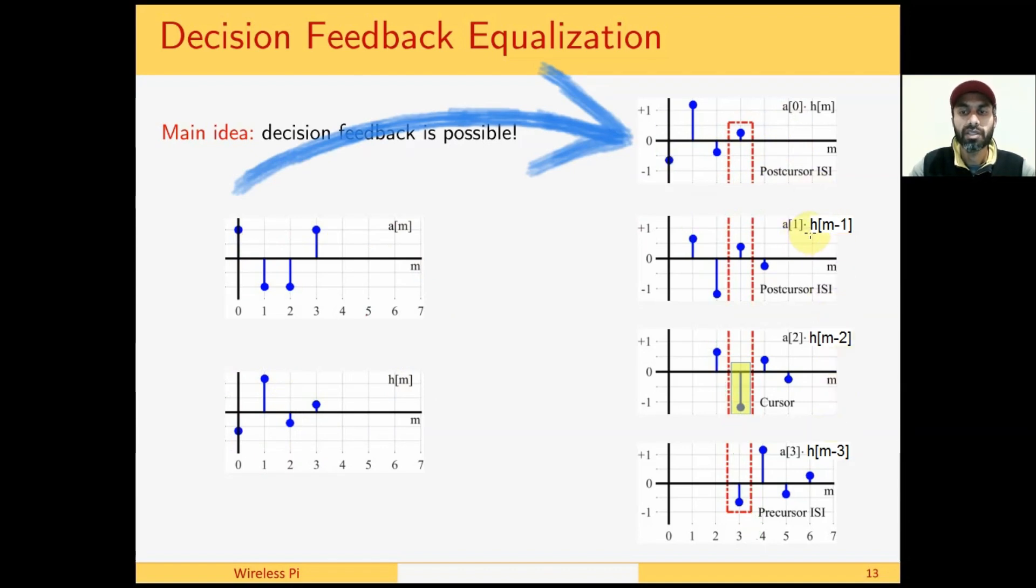and h(m-3). h(m-1) is multiplied by a(1), h(m-2) is multiplied by a(2), and h(m-3) is multiplied by a(3). What we are doing here is shifting the channel response one step at a time and scaling it with the data symbol at that instant.